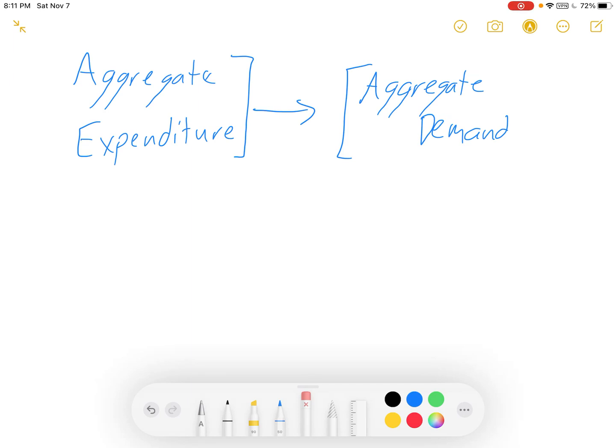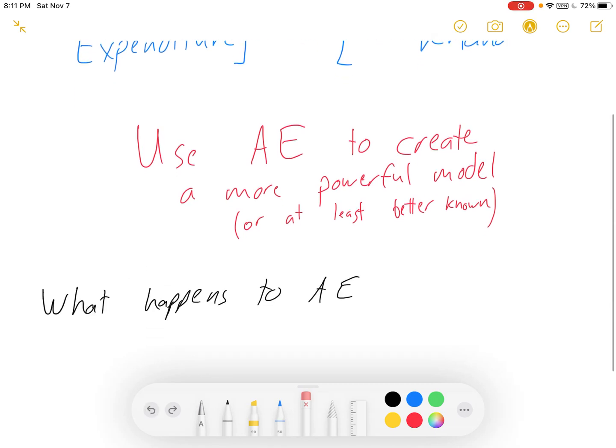The aggregate demand model is usually where we will do most of our short-term business cycle work. So what we're going to do is we're going to use the aggregate expenditure curve to create a more powerful model. Or if you don't like that phrasing, I can at least say a better known model. One of the main reasons we use the aggregate expenditure model is to build this new one.